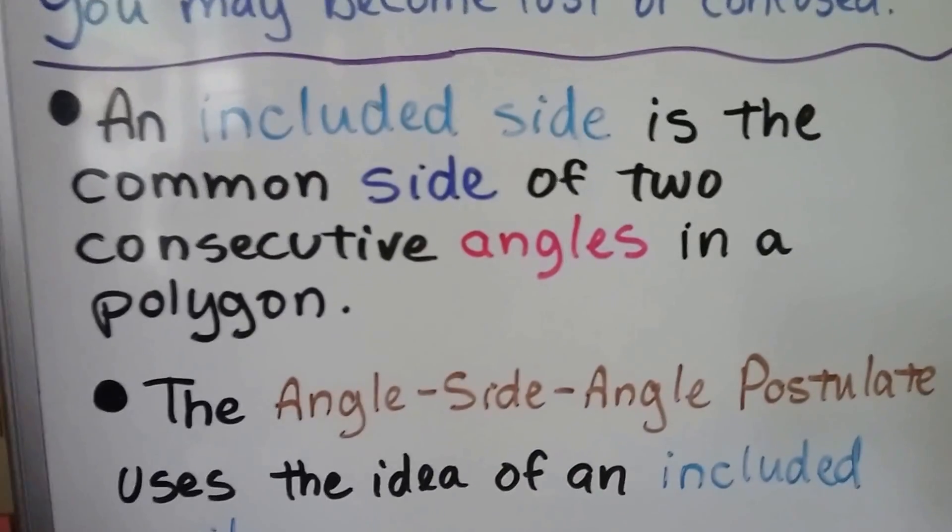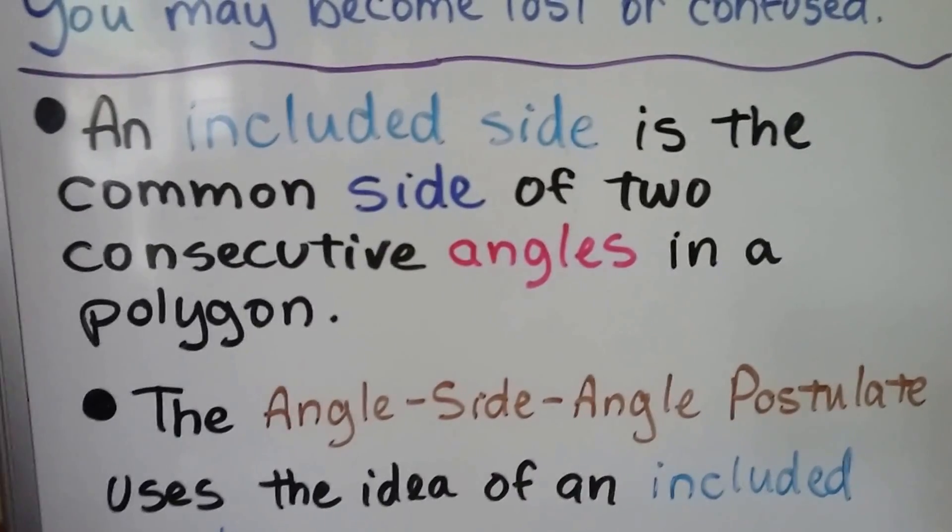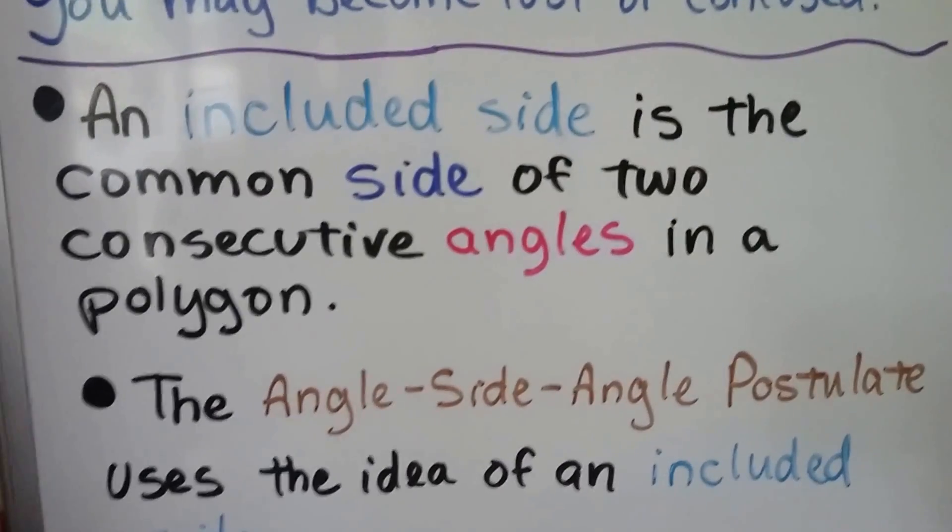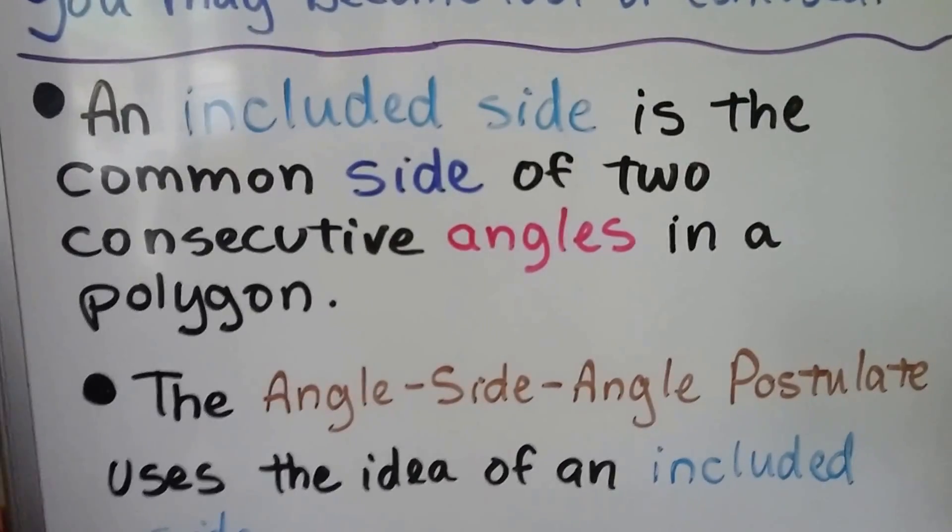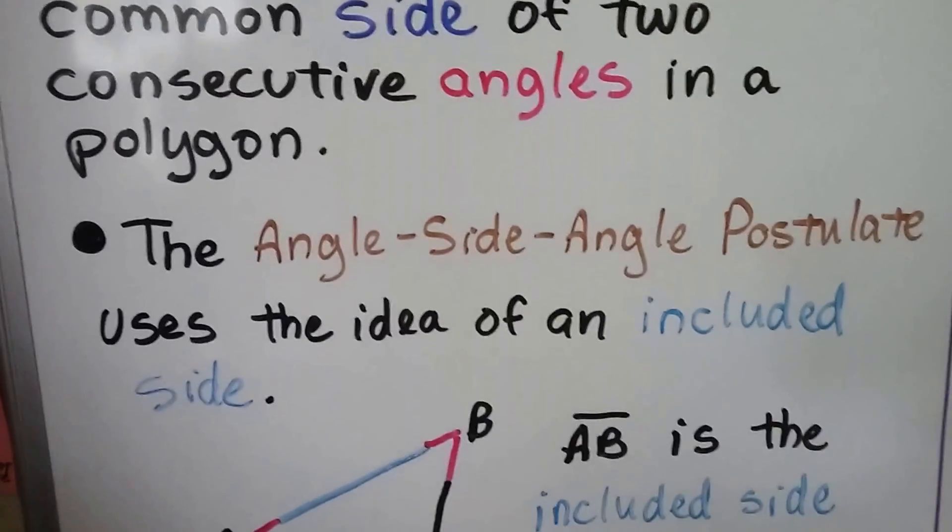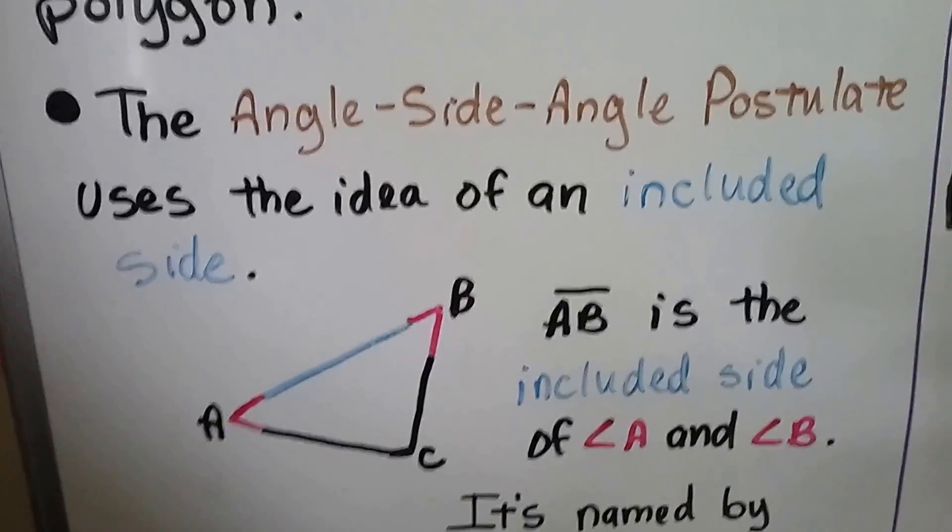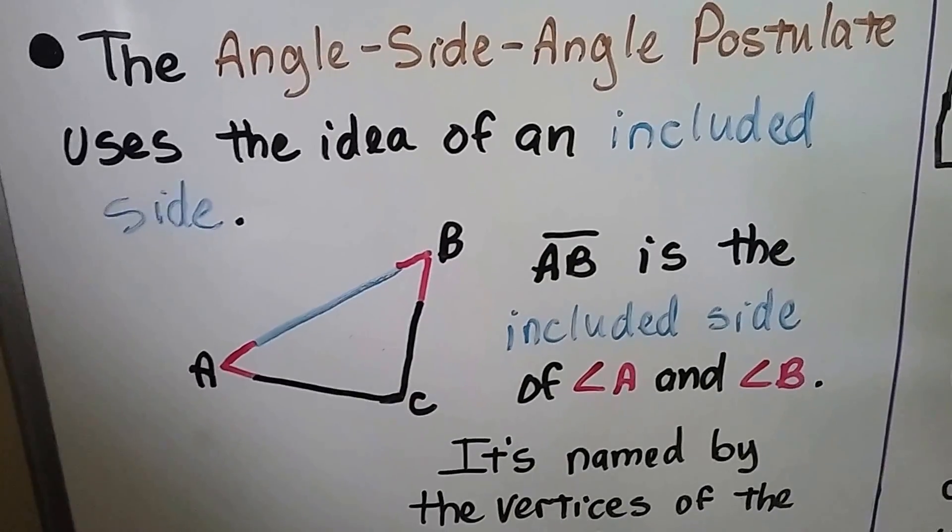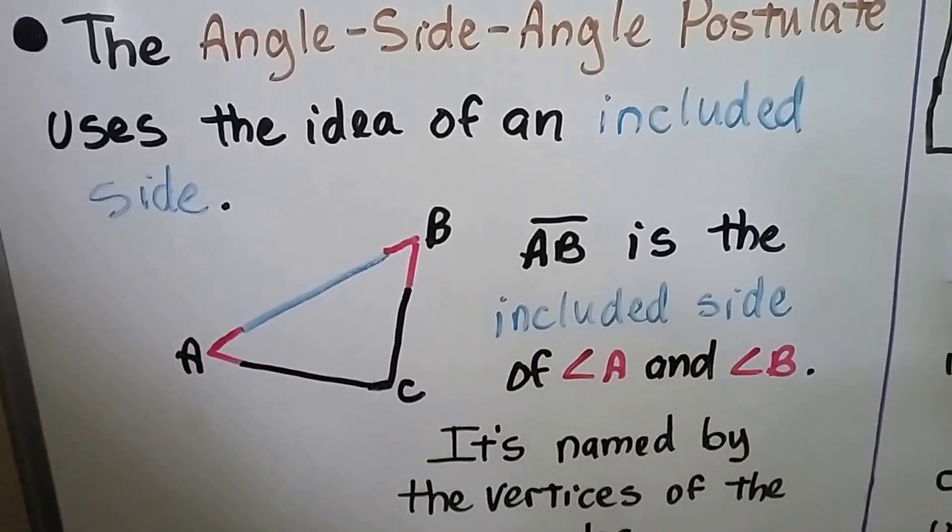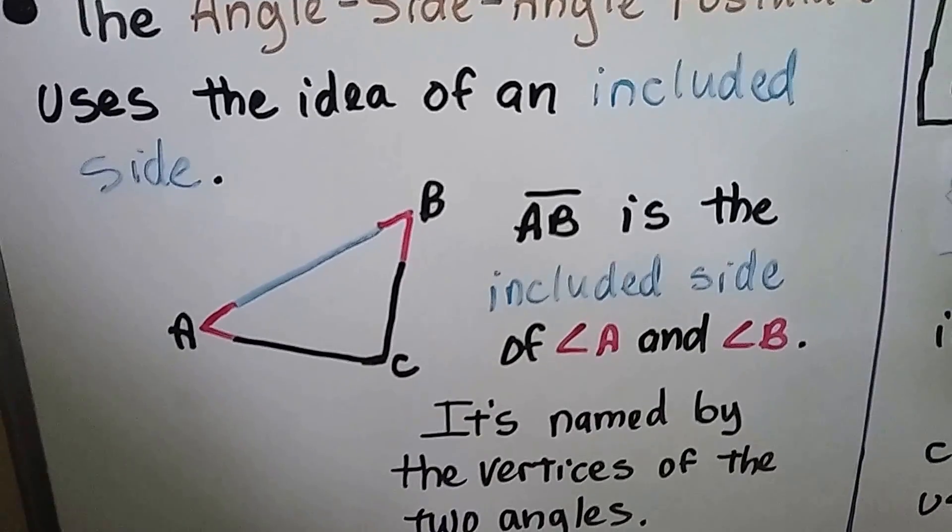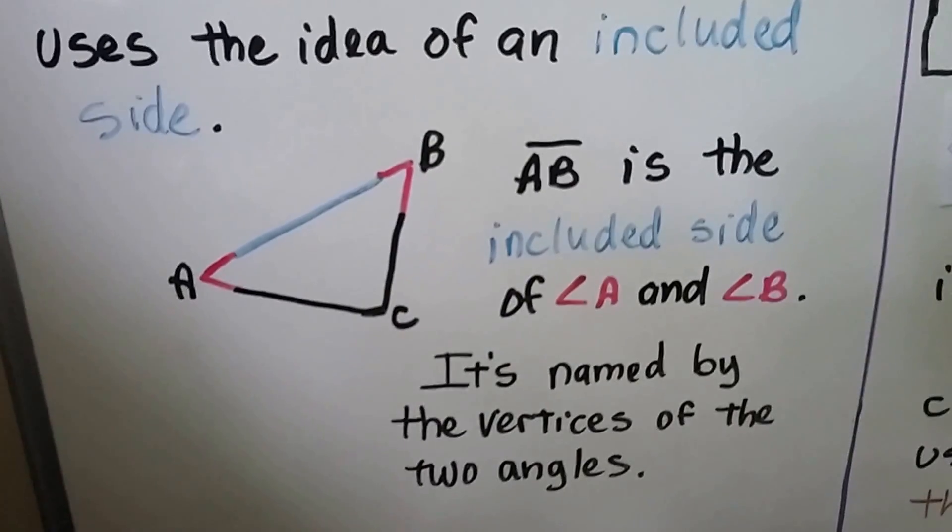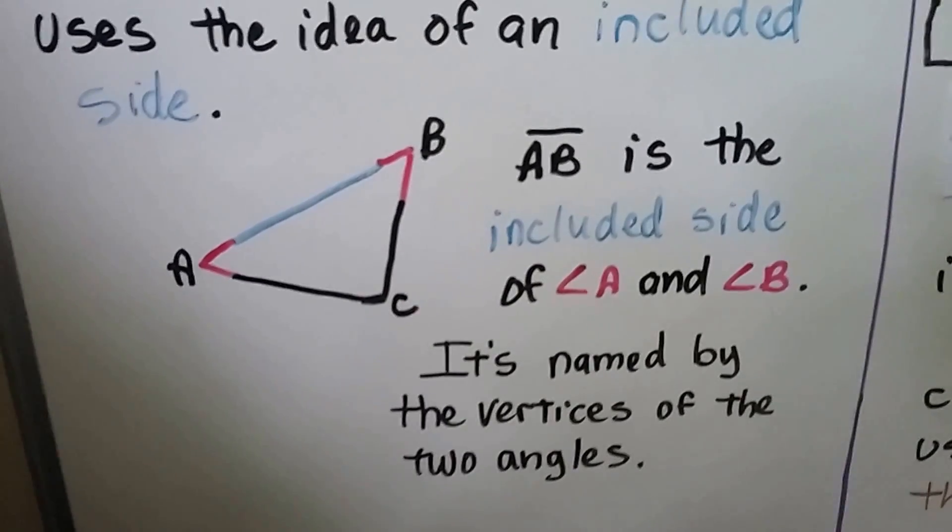An included side is the common side of two consecutive angles in a polygon. In the last couple of videos, we talked about an included angle. Now, this is an included side between two angles. The angle-side-angle postulate uses the idea of an included side. So we have an angle, then a side, then an angle. And segment AB is the included side of angle A and angle B. It's named by the vertices of the two angles.